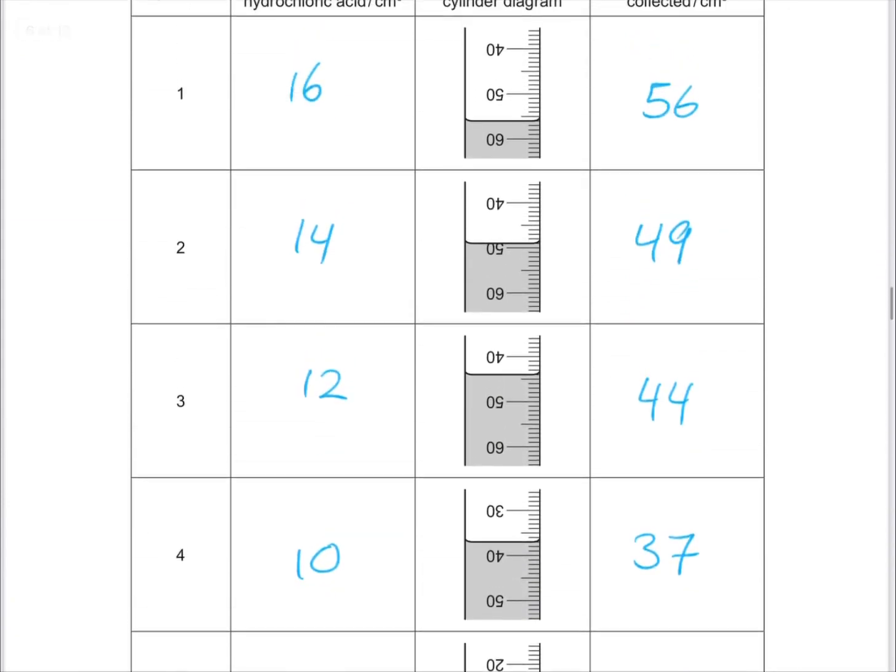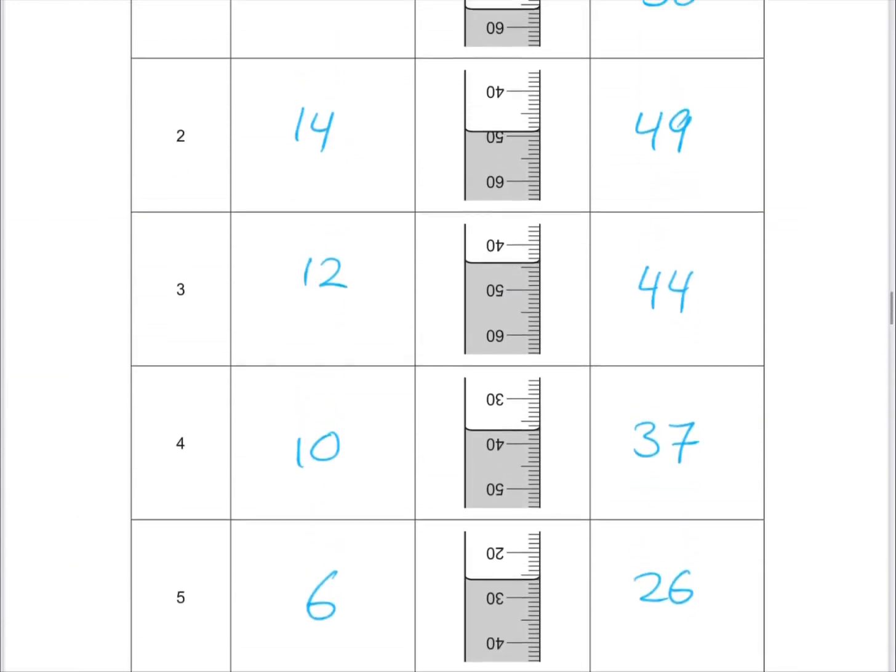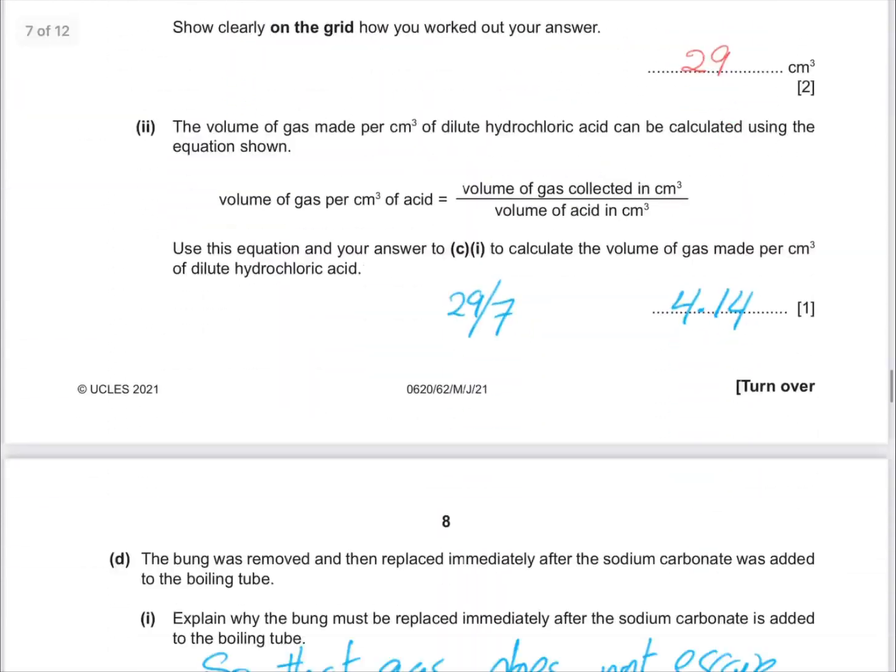So in the same situation, the curve where it was 56 becomes 28. And this one where it was 49 becomes 24.5. So each volume is half.